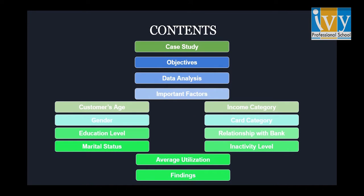We begin with the contents of the analysis. First, we have the case study, which is understanding the data we have. Then we define the objectives, showing the motive behind the analysis. We will look at the data analysis part and the important factors affecting the business, interpreting the data through different graphs and models. At the end, we look at the findings and insights that would help the bank improve their business and concentrate on specific attributes to minimize attrition.